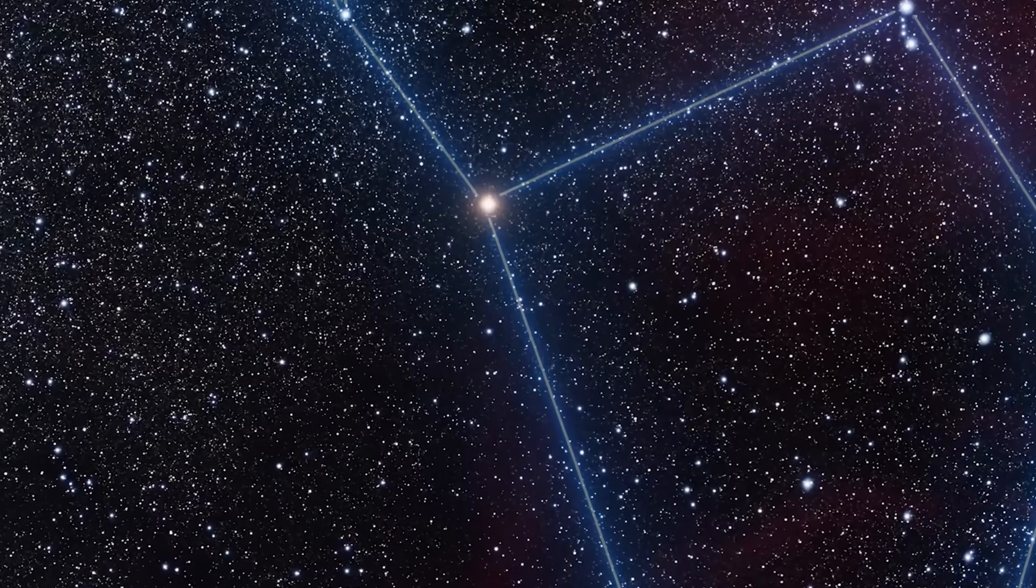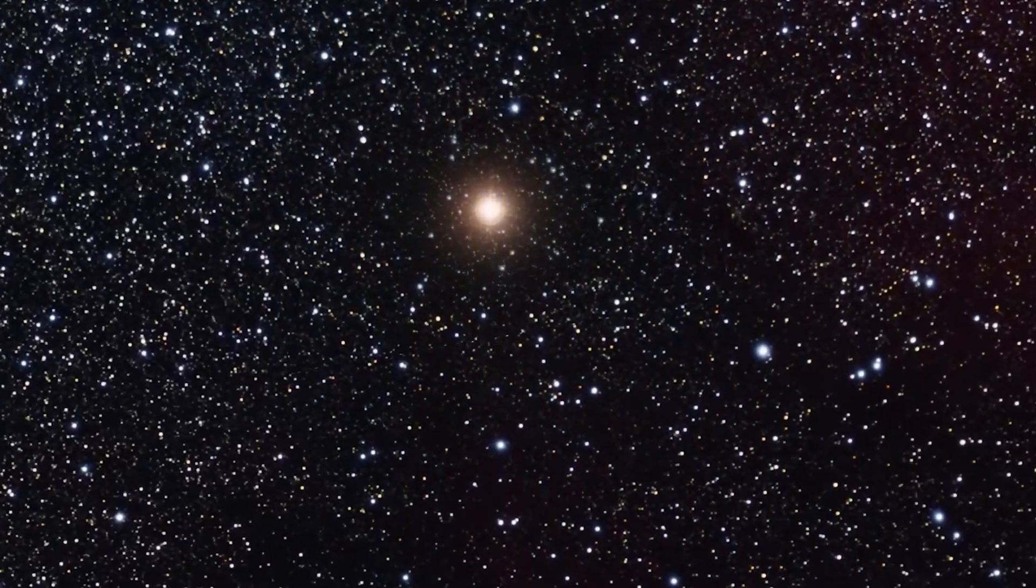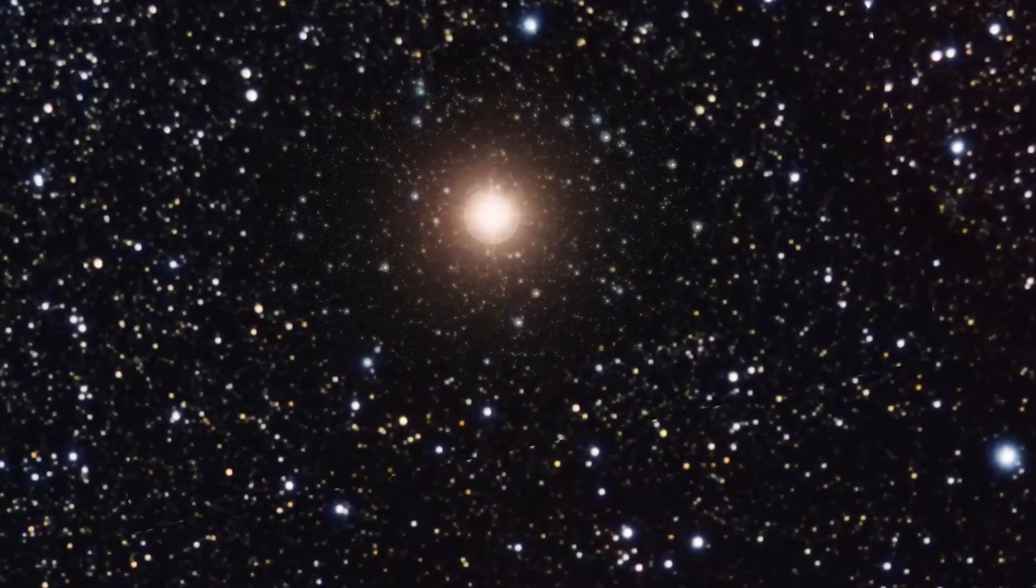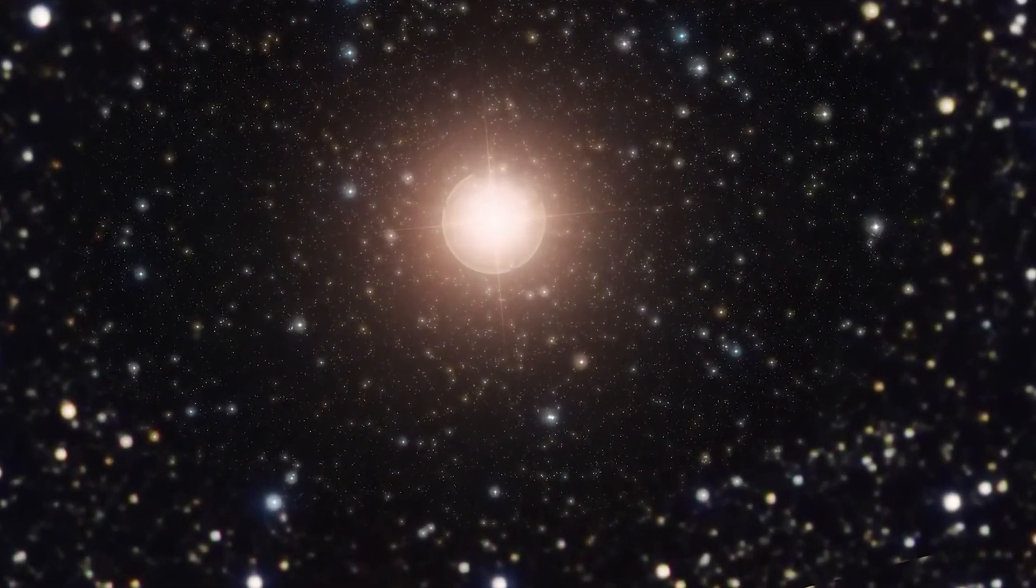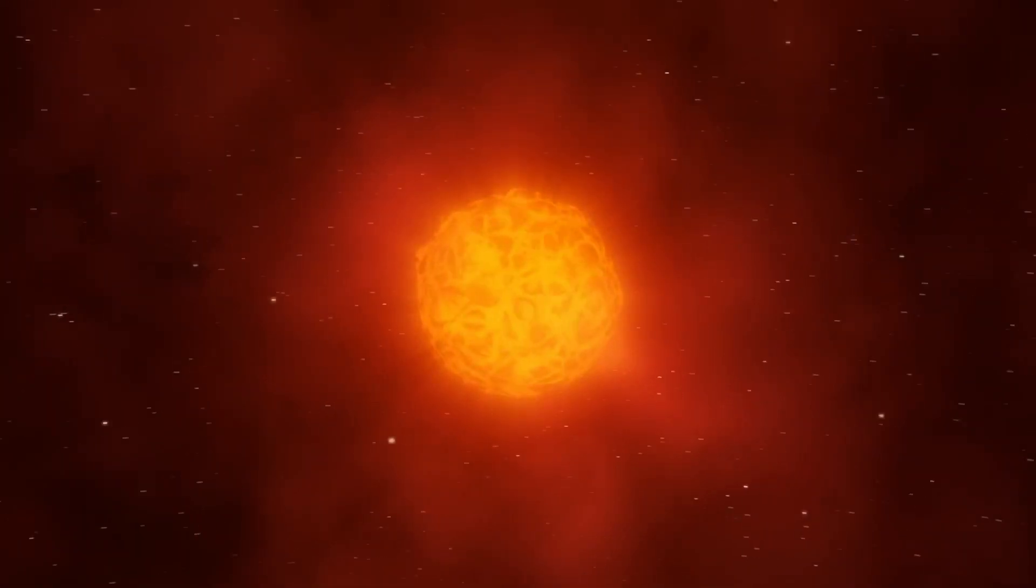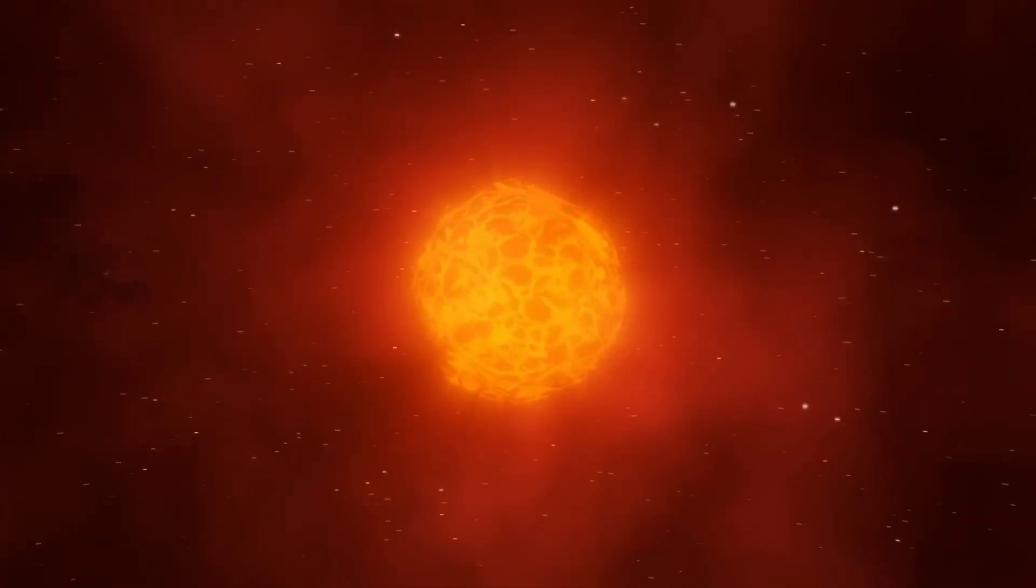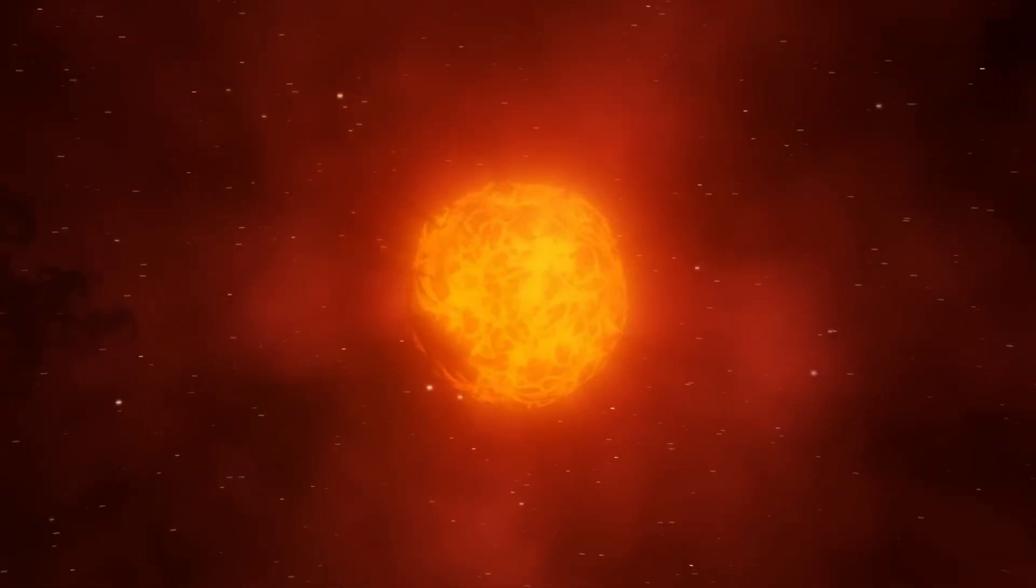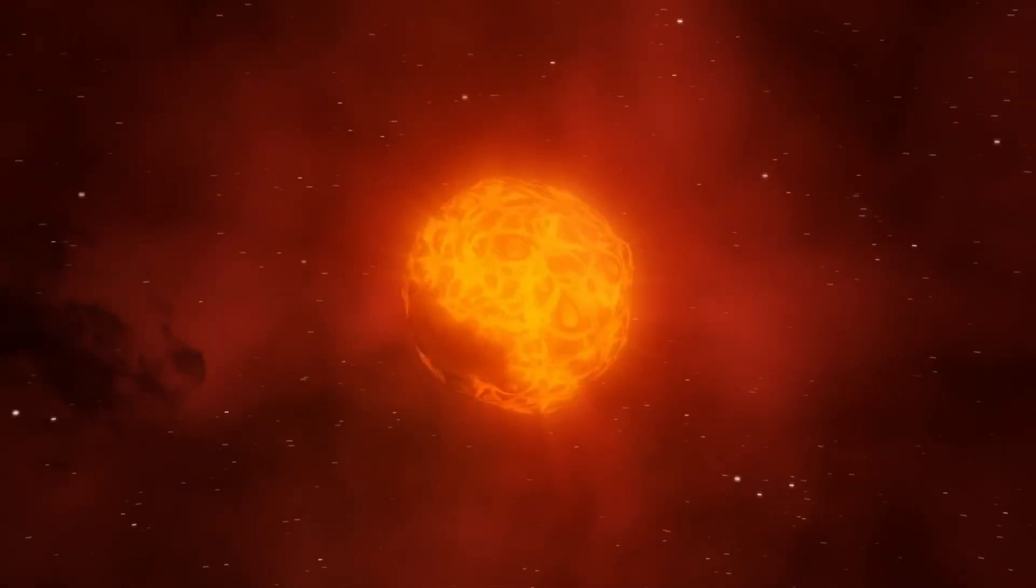Betelgeuse is a colossal star that shines brilliantly in the constellation Orion, approximately 600 light-years from Earth. Immense and unstable, this red supergiant is in the final stages of its existence, undergoing a dramatic phase of transformations.